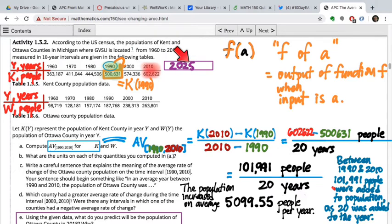Suppose I wanted to estimate Kent County's population in 2025 using the number we just computed, 5099.55. How might I do that? The question asks how we might forecast the population in 2025 based on our information. What I heard from your groups is, well, 2025 is 15 years past the end of the data in 2010. So we need to figure out how many people to add to the 2010 population to forecast 15 years into the future.